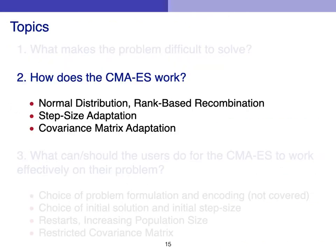We come to part two of our tutorial: how does CMA-ES work? We will give a general search template which embraces many, if not most, search algorithms. We will talk about the normal distribution, step size adaptation, and covariance matrix adaptation.